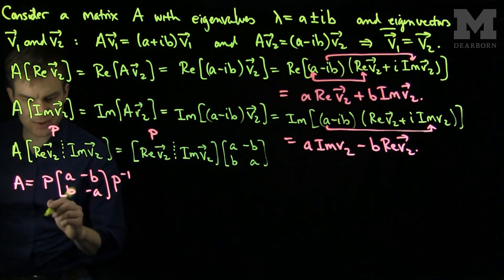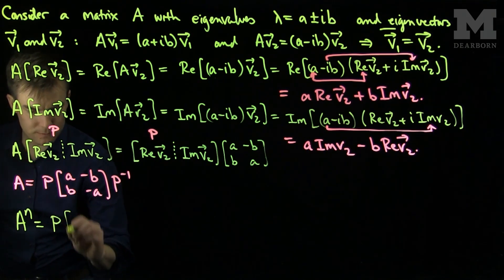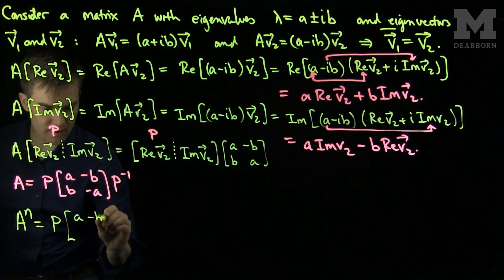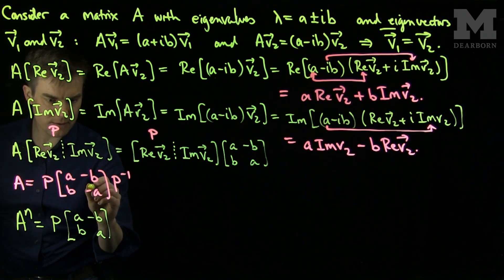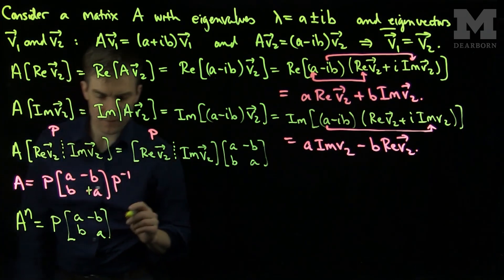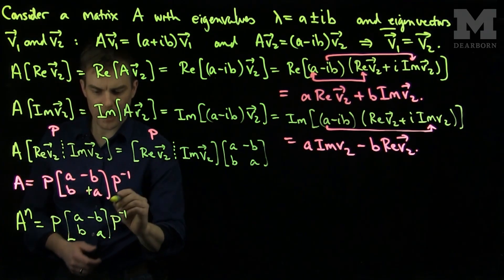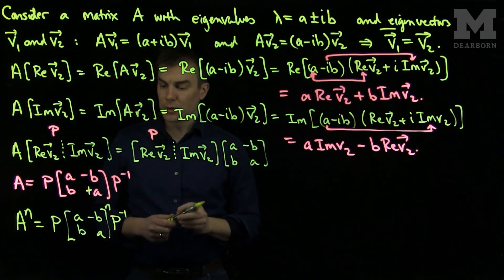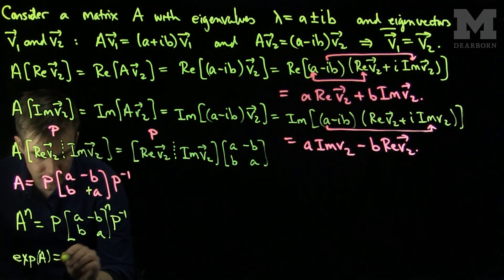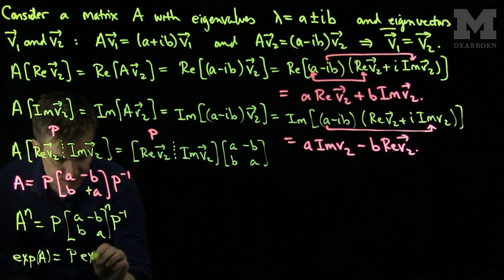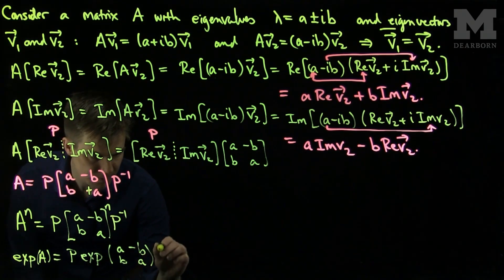As it turns out, we can now say that A to the power of n equals P·[a, -b; b, a]^n·P⁻¹, where the a in the matrix is positive. So to exponentiate this, the exponential of A equals P·exp([a, -b; b, a])·P⁻¹. Our objective is now to evaluate this matrix exponential.